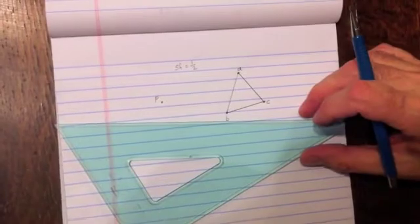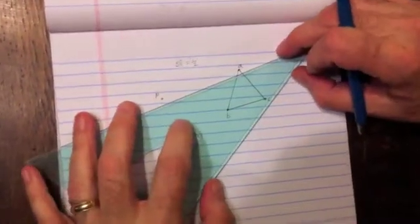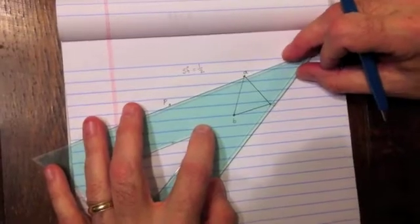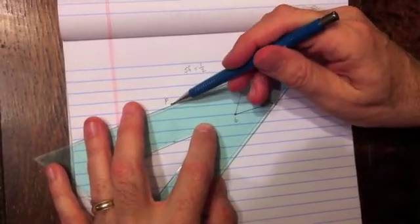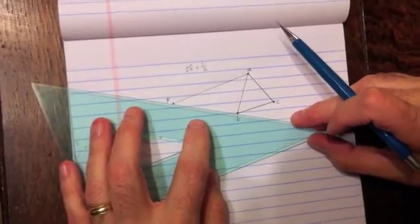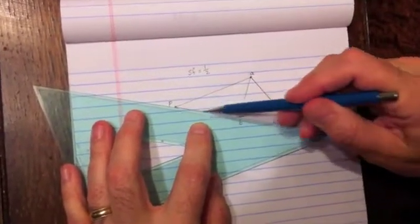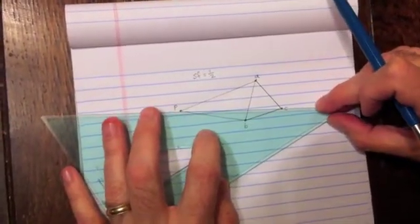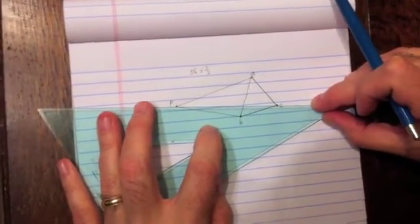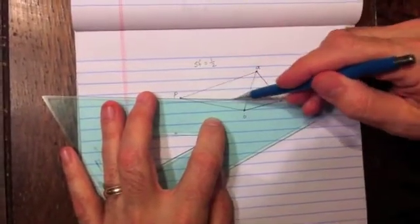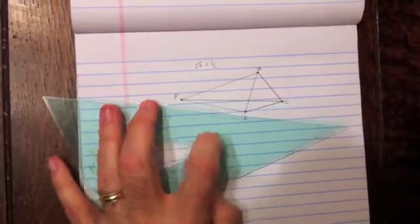The first thing that you do is draw a line from each of the vertices of the figure to point P. So I'm going to draw a line here from A to P, from B to P, and from C to P. Now notice that this line goes right through the figure. That's okay. So there's the first step.